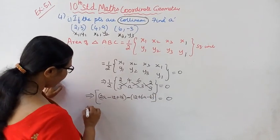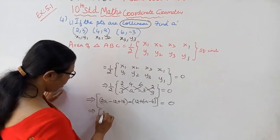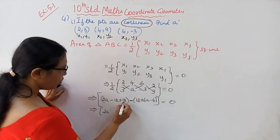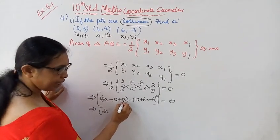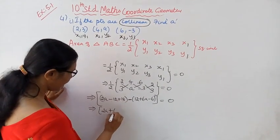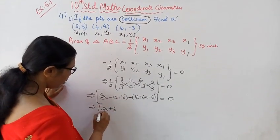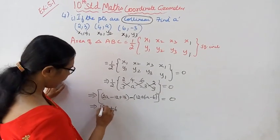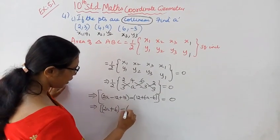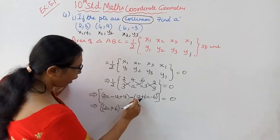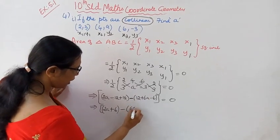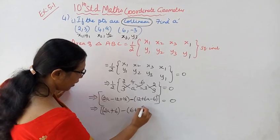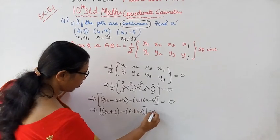Now combining: 2A minus 12 plus 18 plus 6, minus bracket 12 plus 6A minus 6, equal to 0.